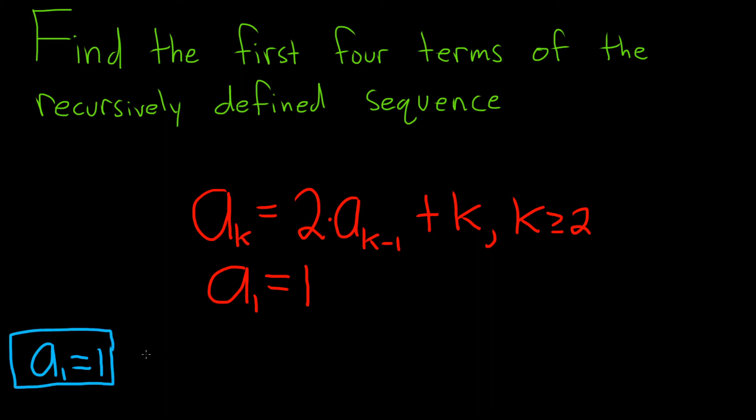Now we have to find the second term. The formula tells us that we can start at k equals 2, because it says k greater than or equal to 2. So we'll plug in 2 for k. We'll have a sub 2 equals 2 times a, and now we're going to put a 2 where the k is. So it'll be 2 minus 1, which is 1, plus k, which is 2.